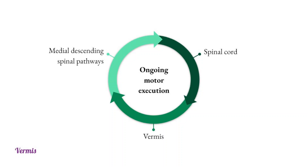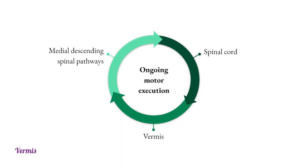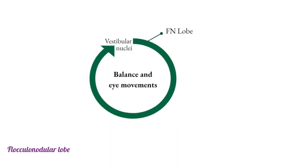The vermis sends efferents to the medial descending motor pathways — anterior corticospinal, reticulospinal, vestibulospinal, and tectospinal tracts — which are responsible for reflexive and postural movements. Therefore, acute lesions to this region, such as from hemorrhage, typically result in truncal ataxia, characterized by a wide-based, unsteady gait. Most cases of cerebellar hemorrhage are caused by hypertensive vasculopathy.